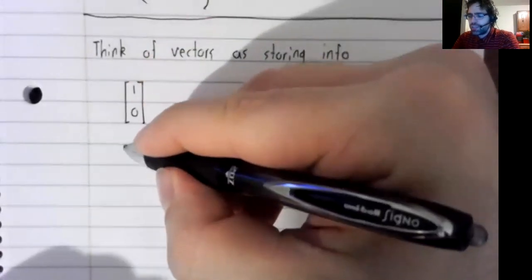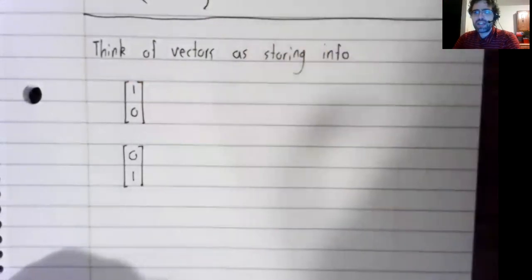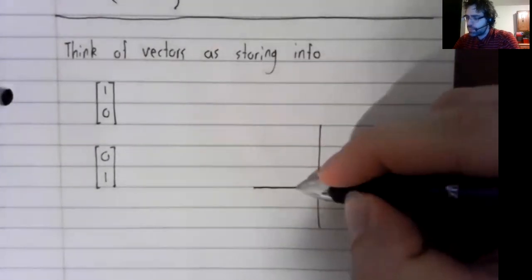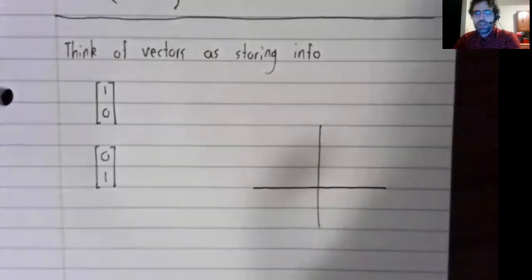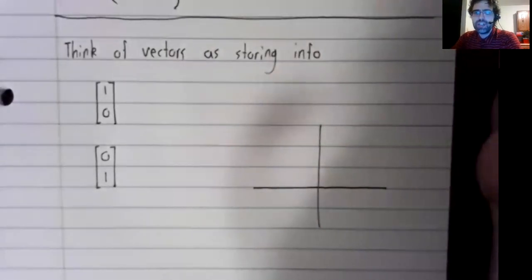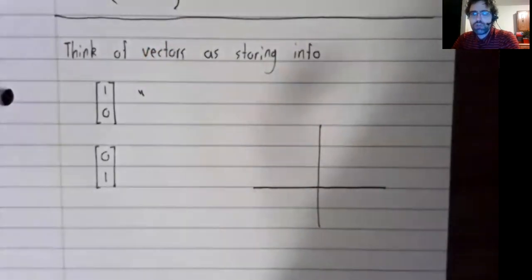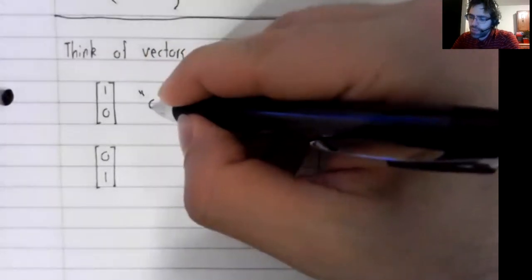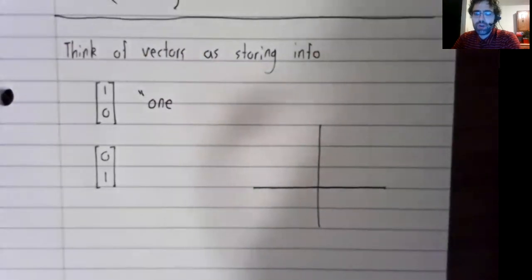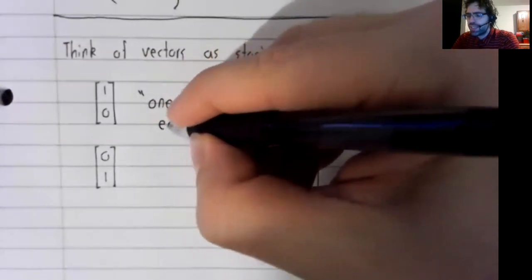And let's look at the standard basis vectors of R2. And let's think of these vectors as storing the following information. They store directions, and this first vector will store the information one unit east.